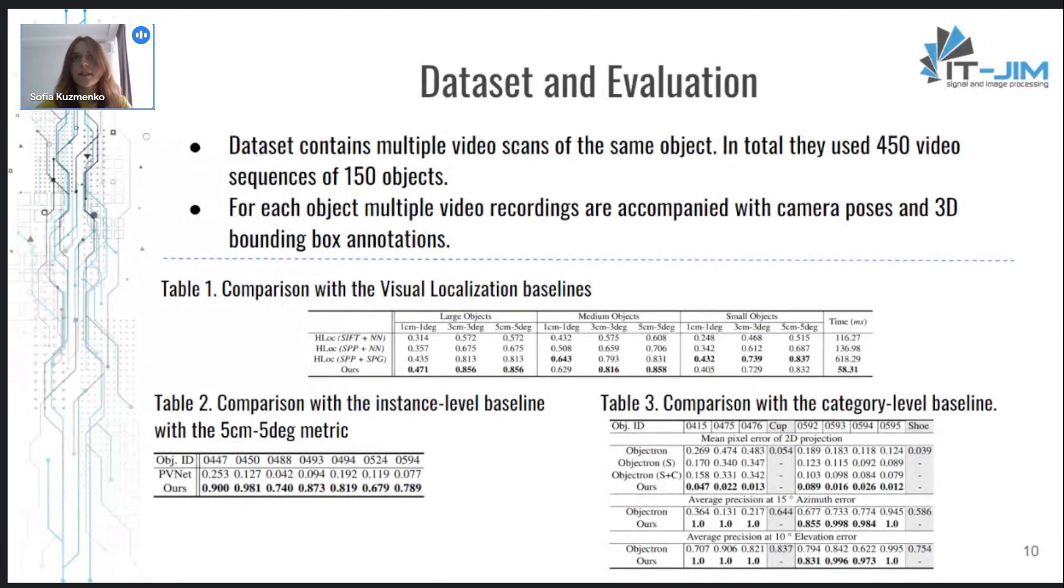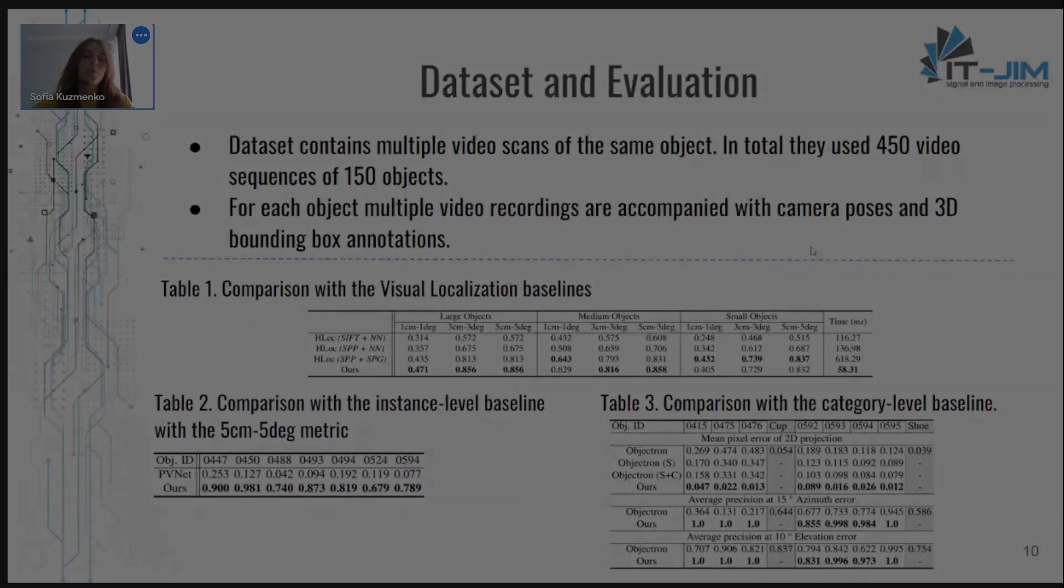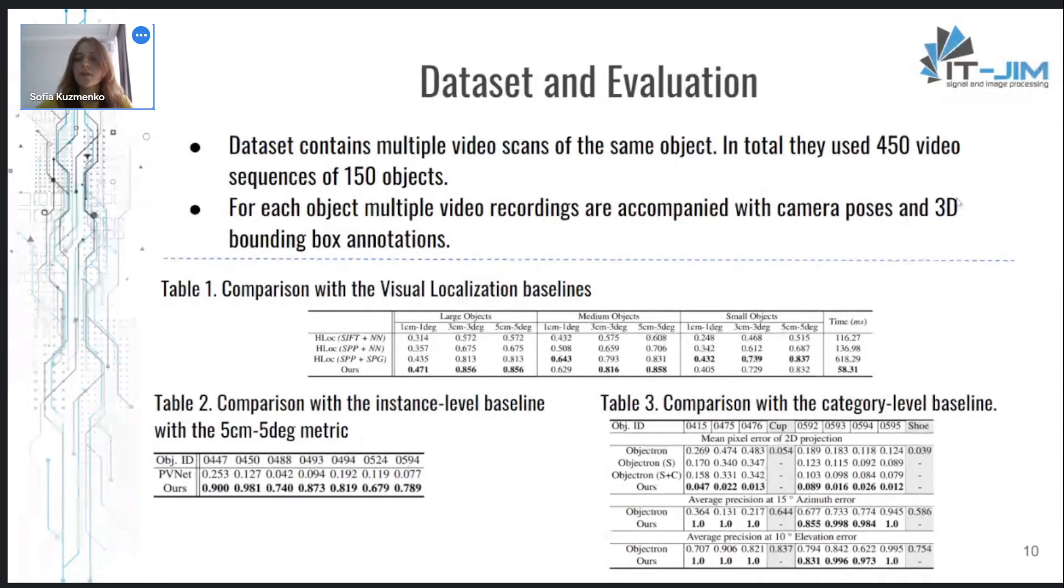For the dataset, authors collected multiple video scans of the same object, put in different locations under different environments, resulting in 450 video sequences of 150 objects. And for each object, multiple video recordings are accompanied with camera poses and 3D bounding box annotations. And for the validation set, each object is assigned with one mapping sequence for building the SFM map, and the rest of the sequences are used for the evaluation.